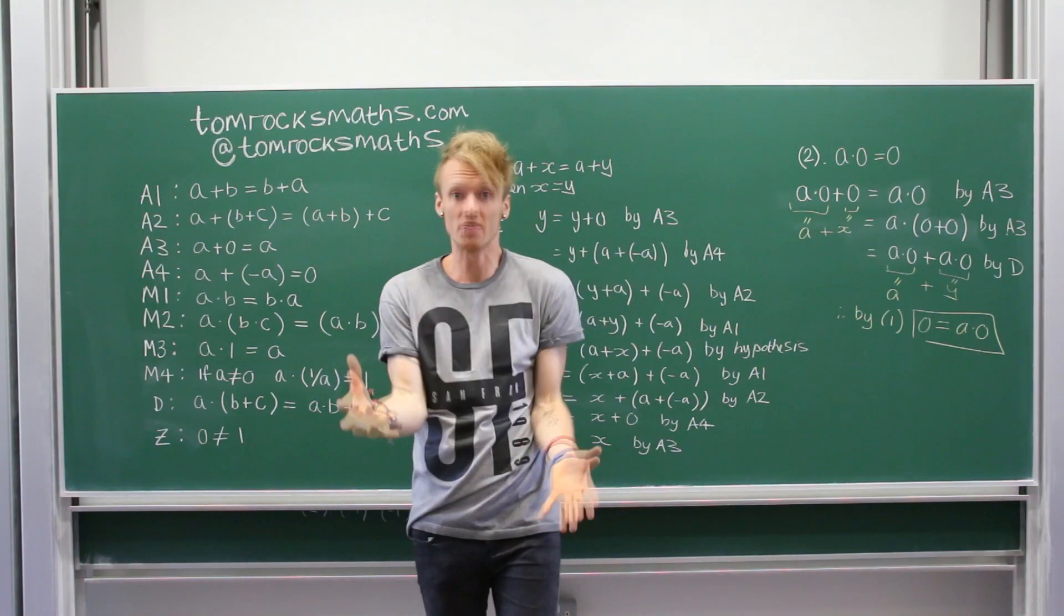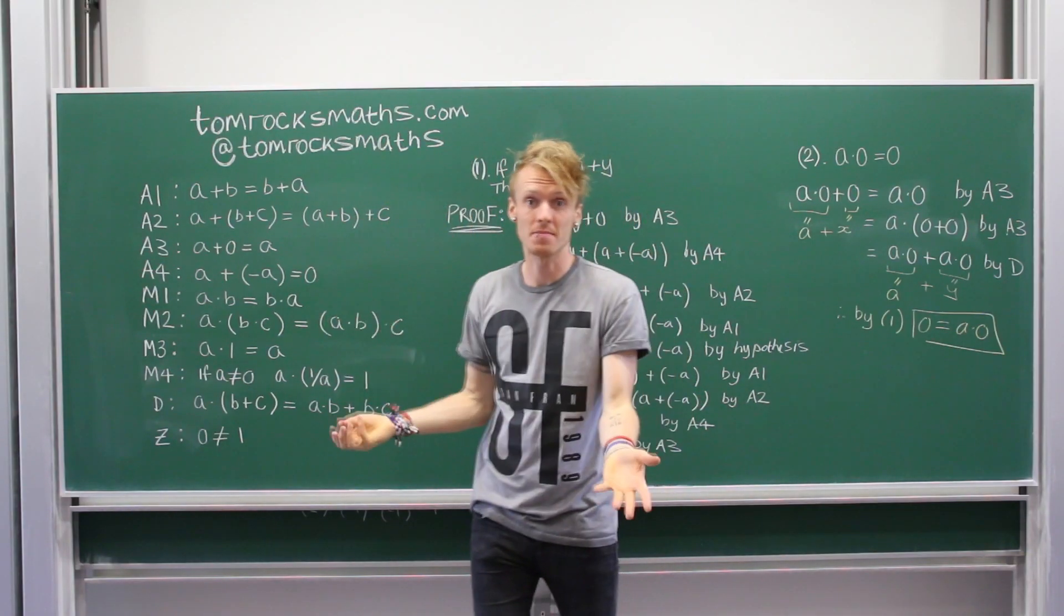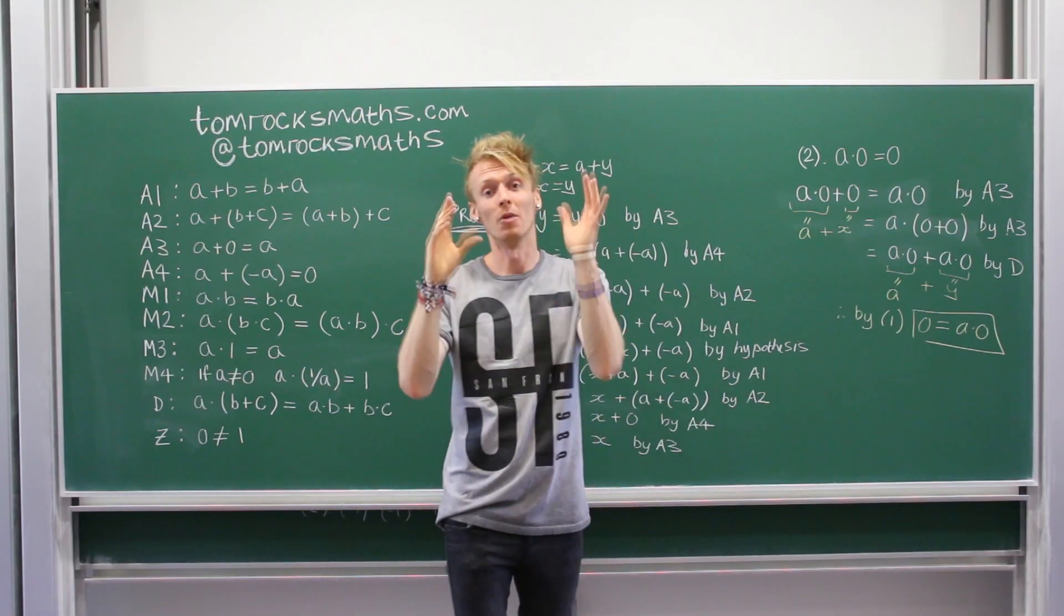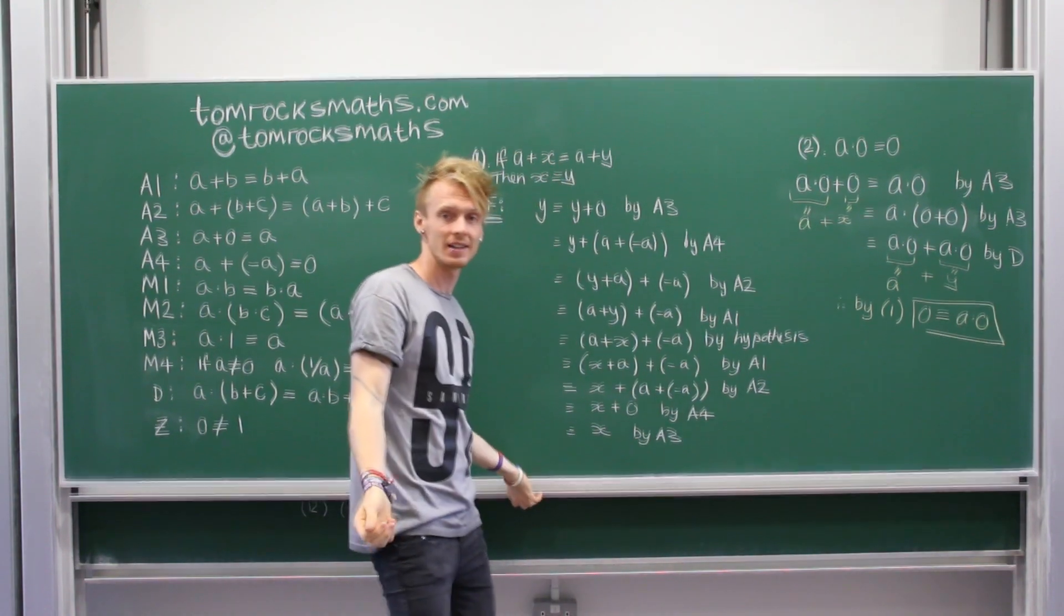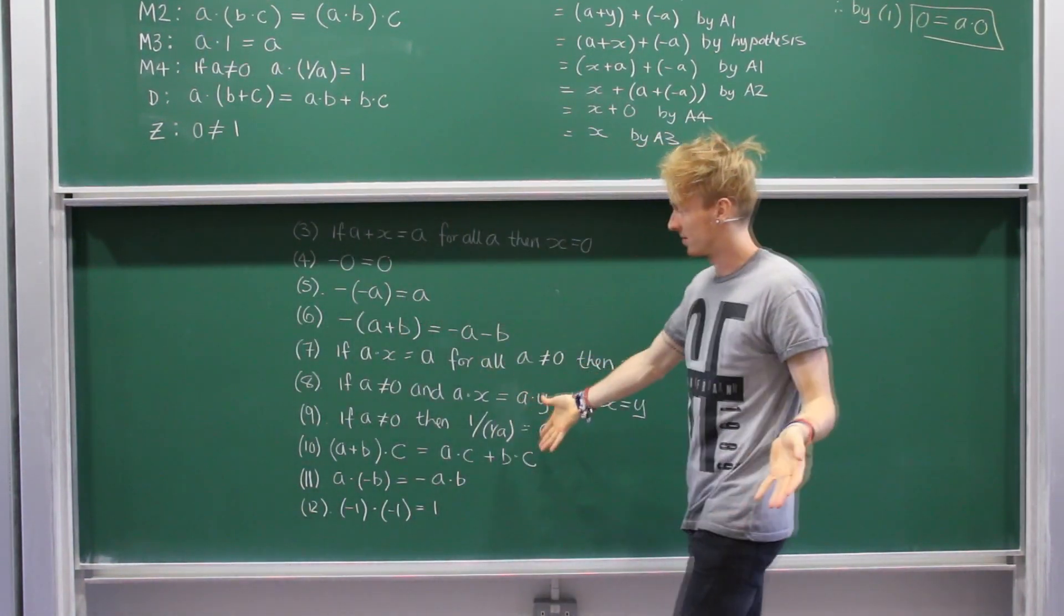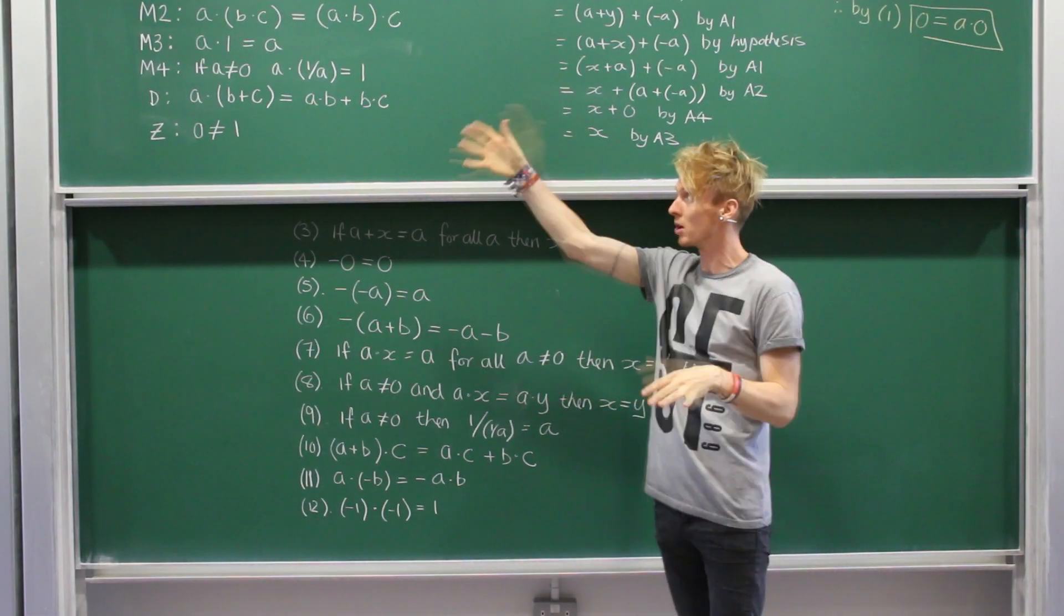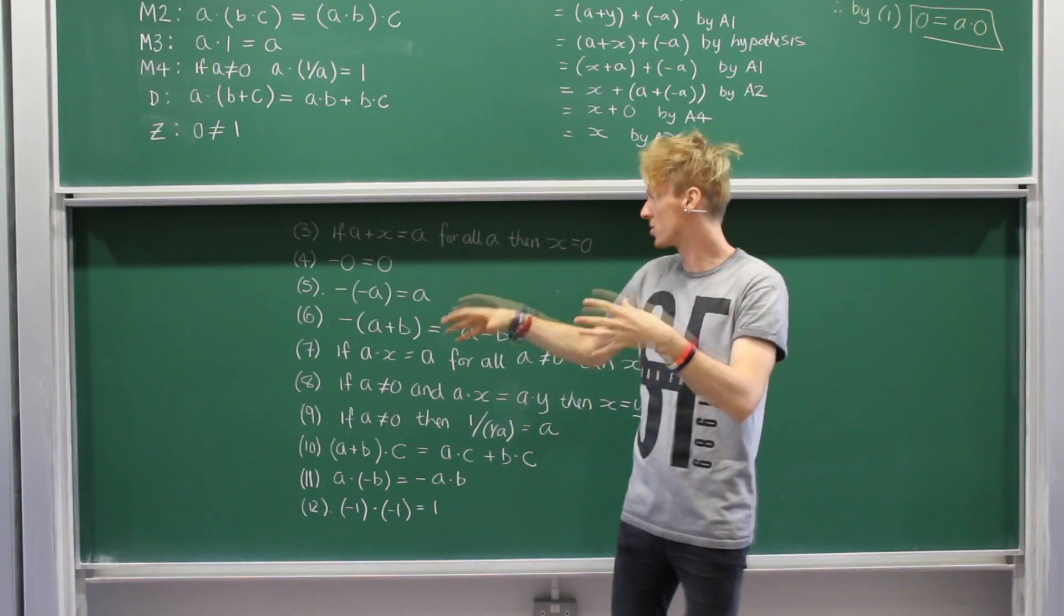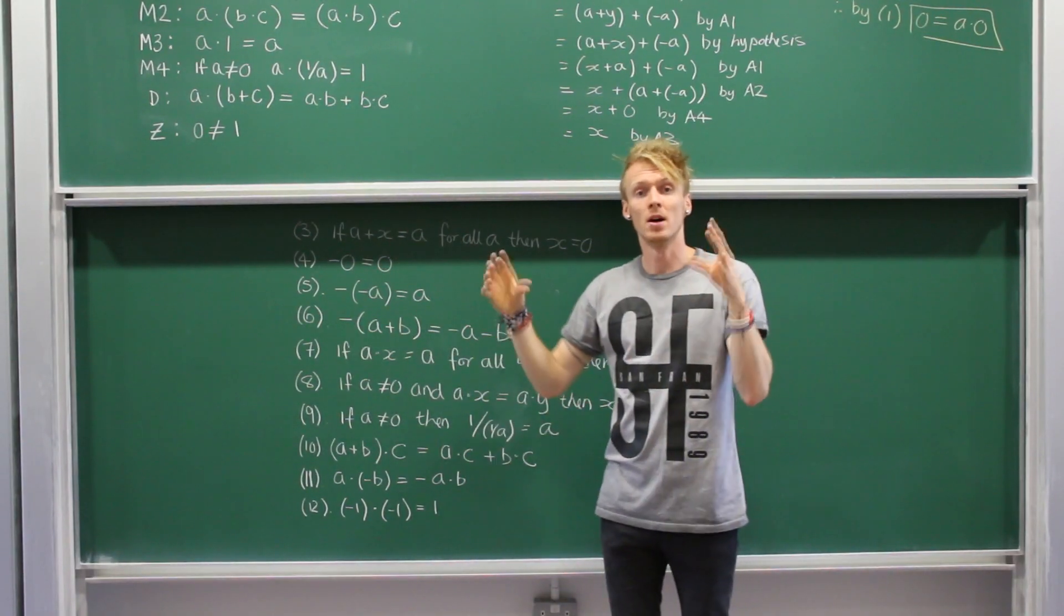There are, of course, many other results which can be proved in the same way, relying on earlier results and relying on the axioms. And I don't have time to do them all, so what I've done is I've written out a list of 10. I want you guys at home to have a go, see if you can do it, and then send me your solutions. 10 other properties which can be proved using purely the axioms. Some of the later ones in the list will rely on using the earlier results, so I suggest you start with number 3 and work your way through to number 12.